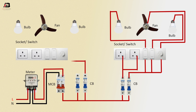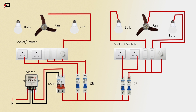Phase connection from the circuit breakers goes to the other room's switch and regulator. Also connect from the circuit breaker to the socket. Phase connection output from the regulator connects to room one fan. Phase connection from the switches connects to room one bulb. Phase connection from another switch connects to room one another bulb.